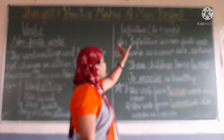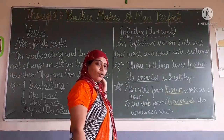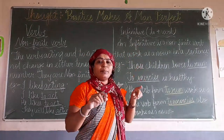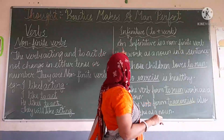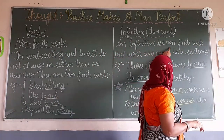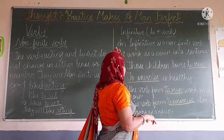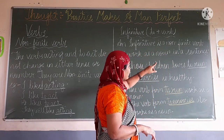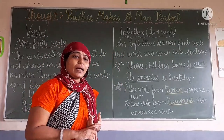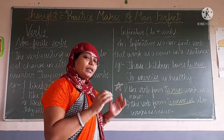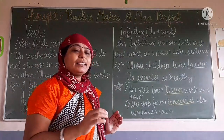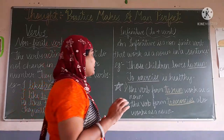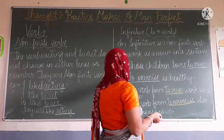After non-finite verbs, now we are going to look at the infinitive. The infinitive is similar to a non-finite verb, but in this, 'TO' plus a verb is used — they are adding TO with every verb. An infinitive is a non-finite verb that works as a noun in a sentence. The infinitive word is like a non-finite verb, but it works as a noun in the sentence. Here I have given two examples.